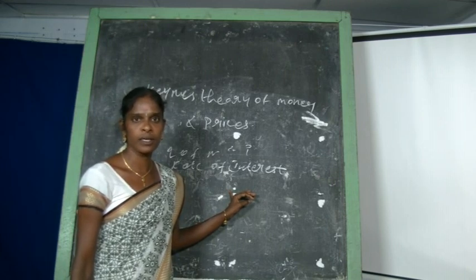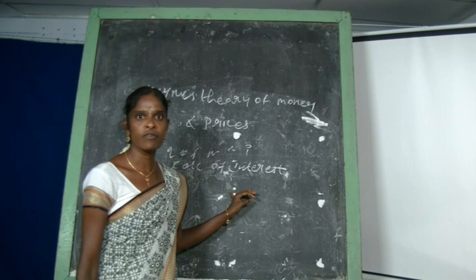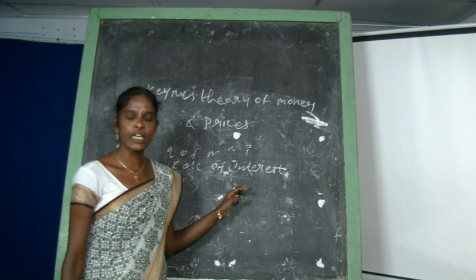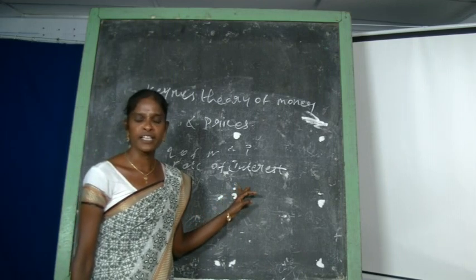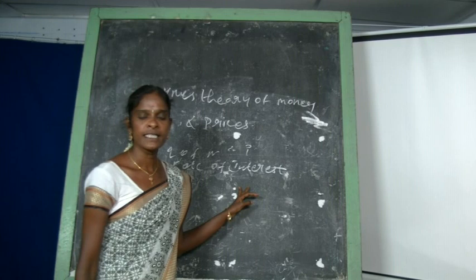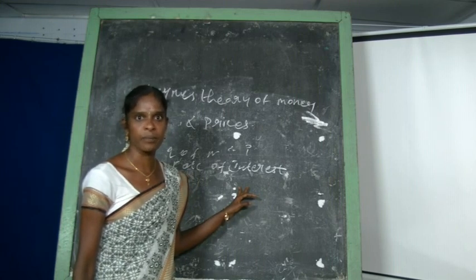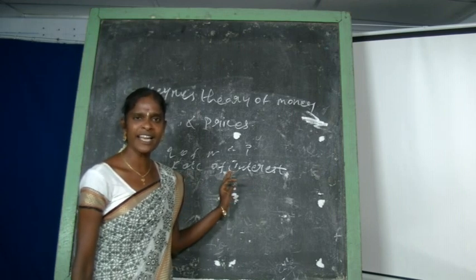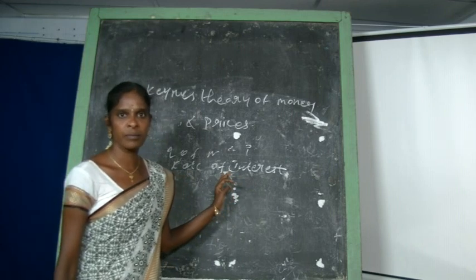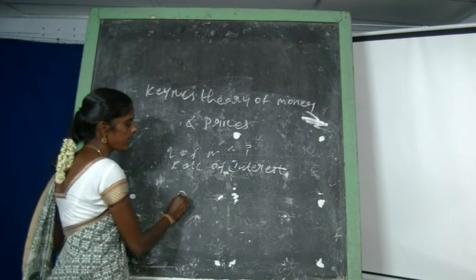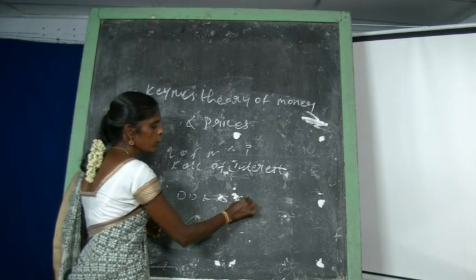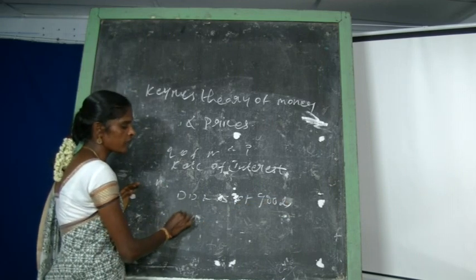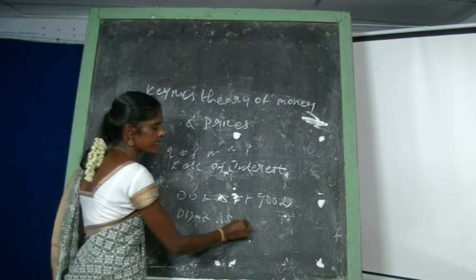In Keynes's theory of money and prices, there is a direct relationship between the price level. This division involves relative prices and absolute prices. Relative prices are determined by the demand and supply of goods, while absolute prices are determined by the demand and supply of money.